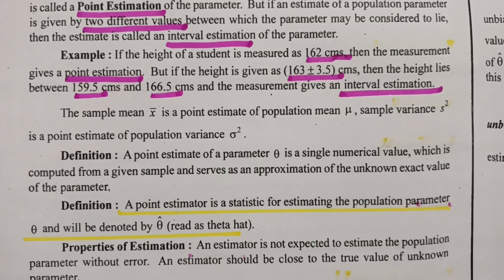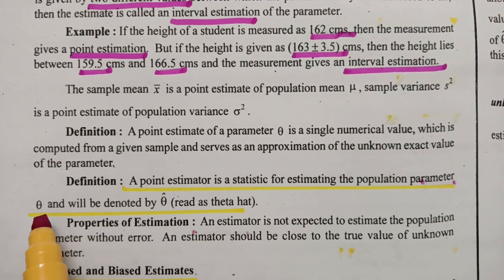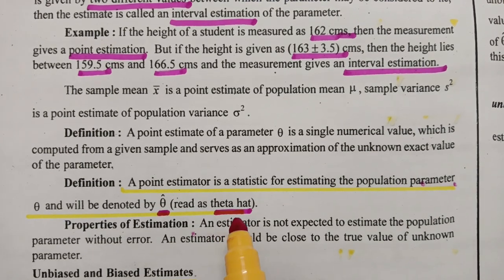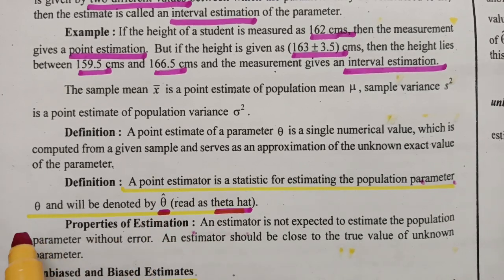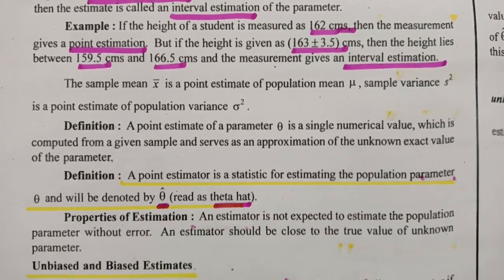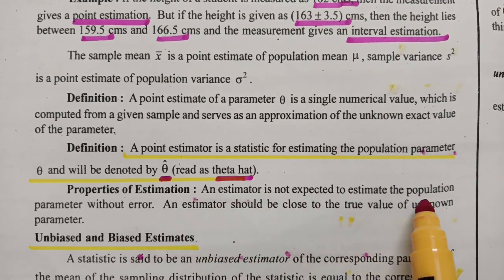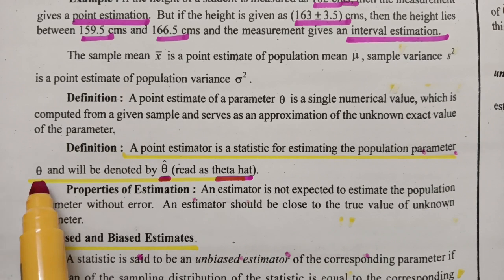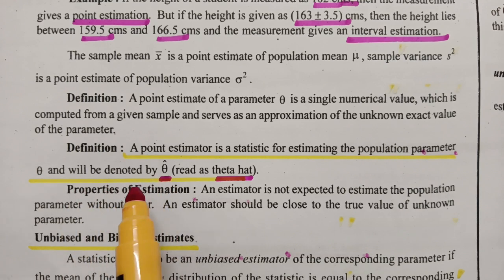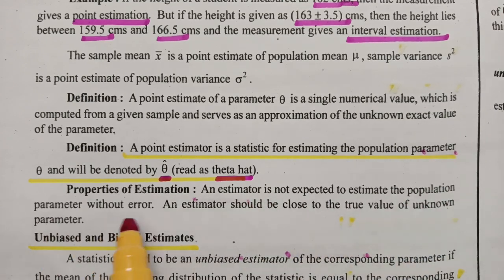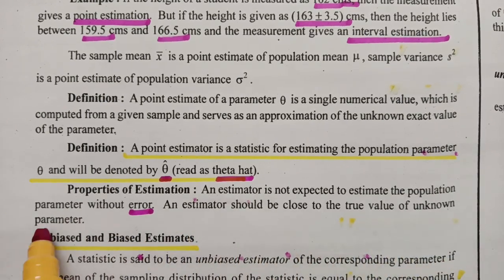The point estimator is a statistic for estimating the population parameter, denoted by theta hat. Our estimated or guessed value is theta hat, and the actual value is theta. For example, if the actual mobile phone price is 19,000 rupees, that is theta, while the predicted value is theta hat. An estimator is not expected to estimate the population parameter without error — there will certainly be an error. If I said the price is 15,000 but the actual price is 19,000, the variation of 4,000 is the error. An estimator should always be close to the true value of the unknown parameter.